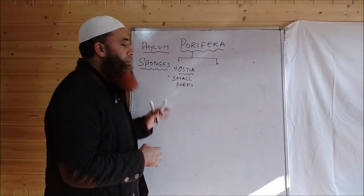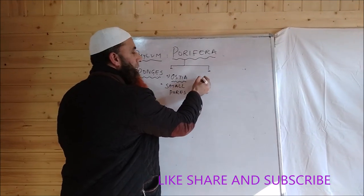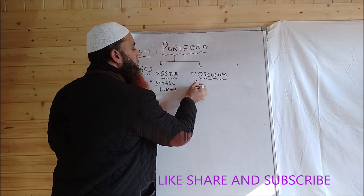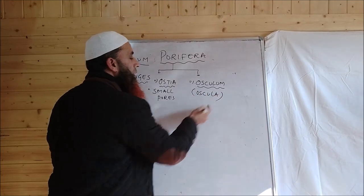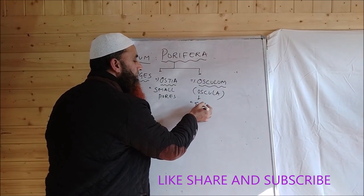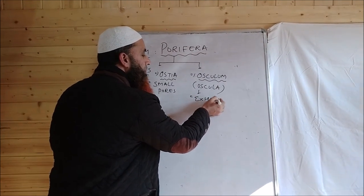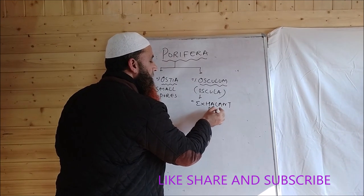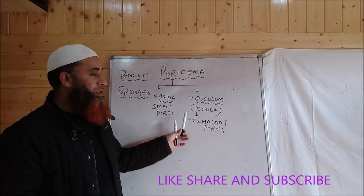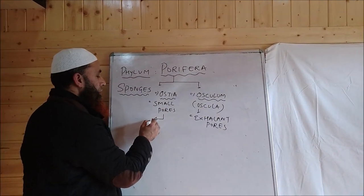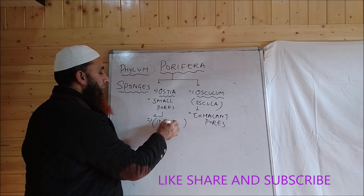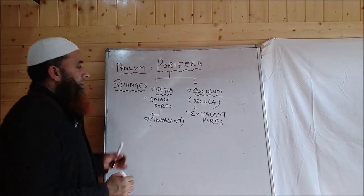Ostia are small pores and numerous in number. There is another pore called osculum, which is an exhalant pore. The water which enters into the canal system leaves through the osculum. The inhalant pores are called ostia.